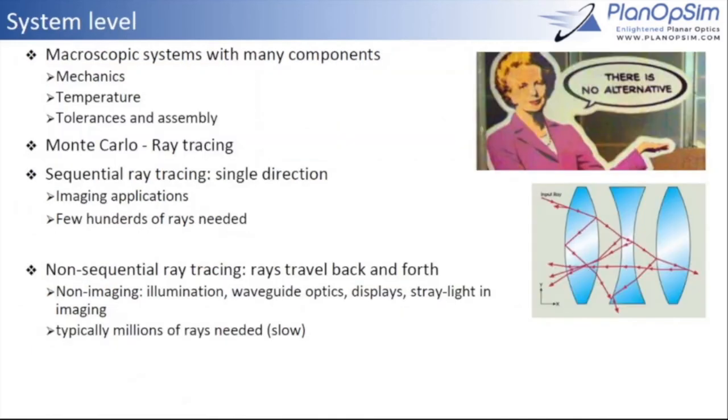And once we're transferring between different lens surfaces, we are at the system level and we can apply the well-known ray tracing methods that have been around for a long time. This also allows the designer to interface with mechanical engineering, calculate for temperature stability, have a look at tolerance and assembly stability. This is called Monte Carlo ray tracing.